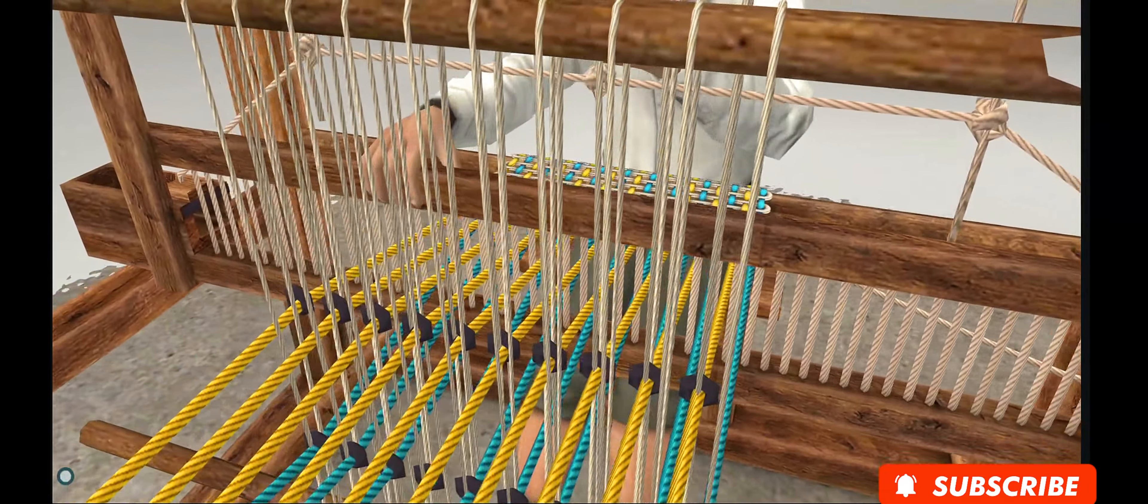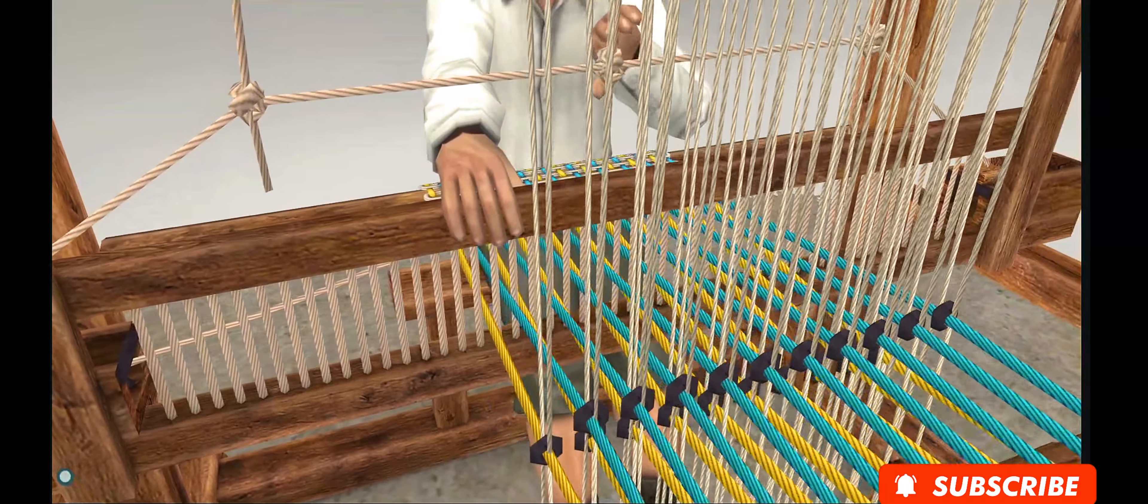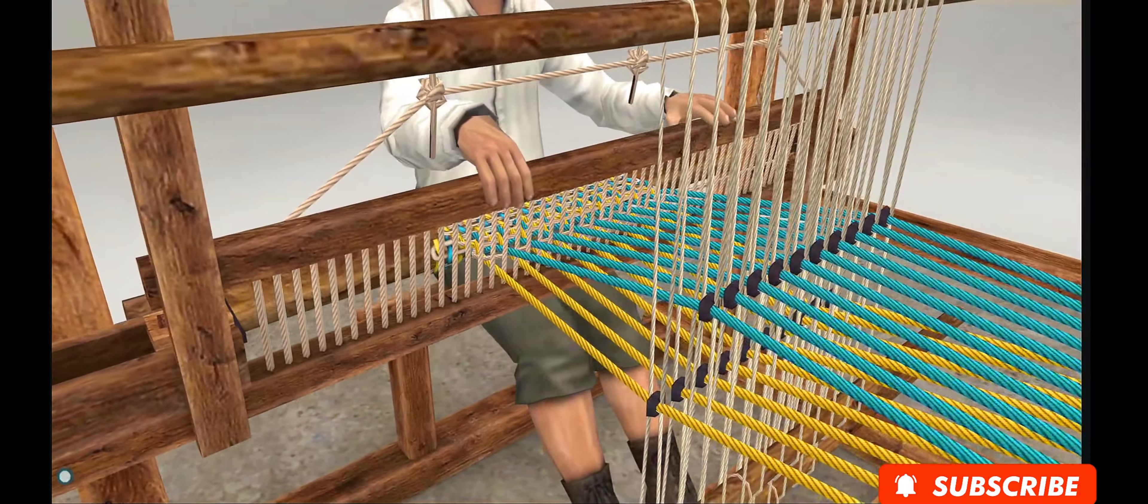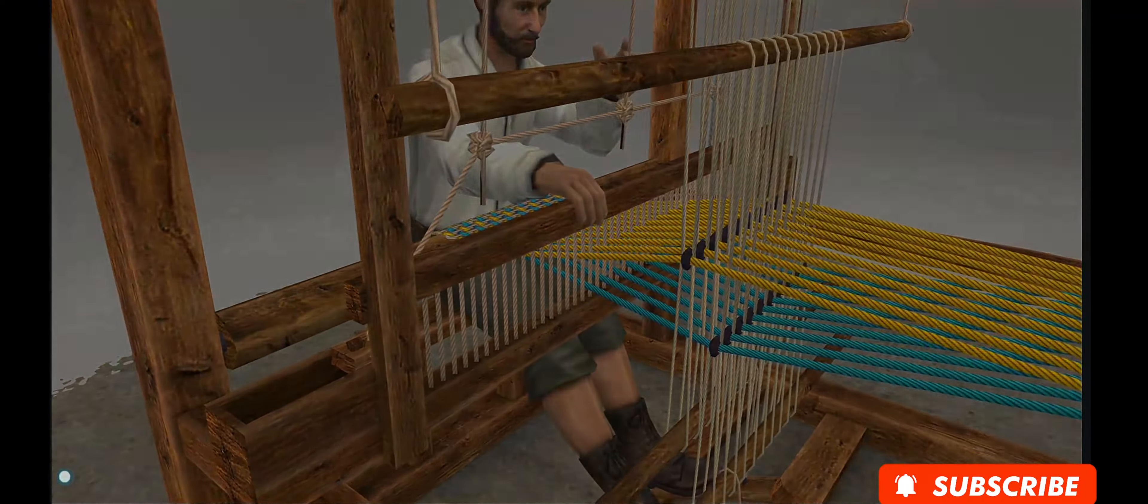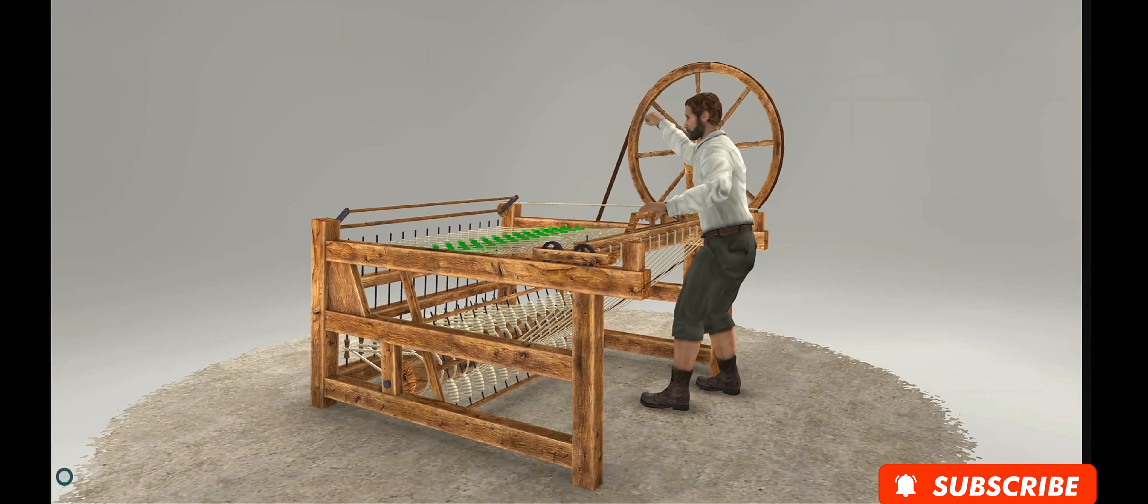John Kaye's invention, patented in 1733, speeded this phase up. The weaver could pass the bobbin with a single move, saving time and labor.